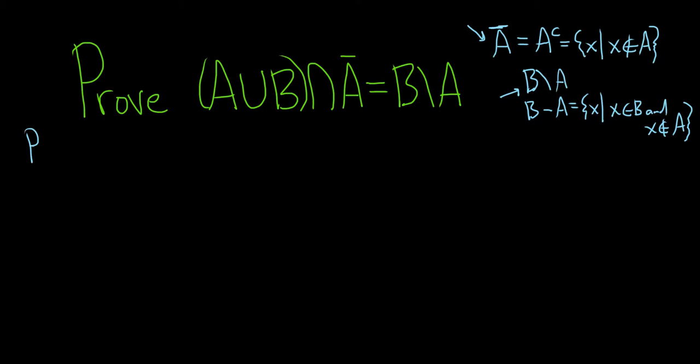Okay, so proof. Let's go through this carefully. I have not done this problem before, so I'm going to take my time. So we'll show this direction first. So basically that means that we're going to take an element in this set here on the left, and we somehow have to show it's an element of the set on the right.